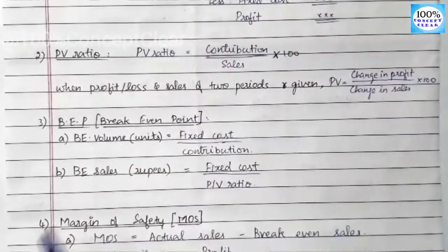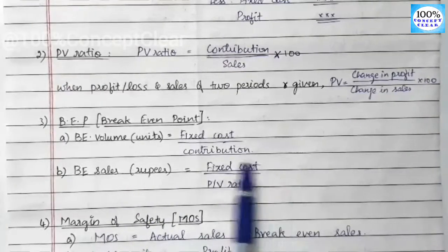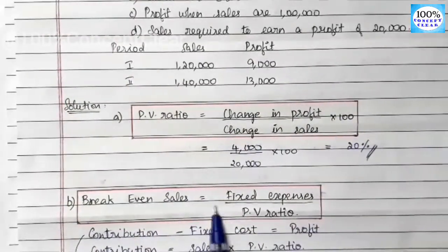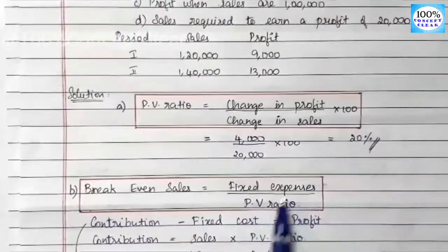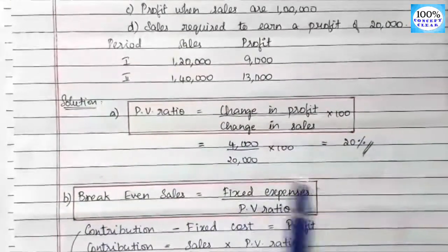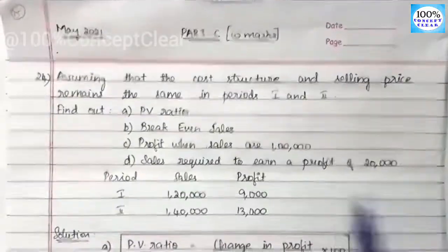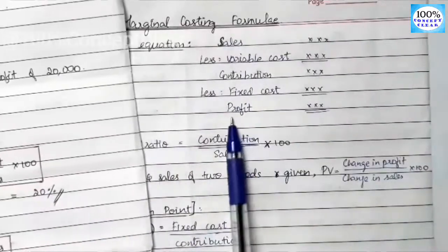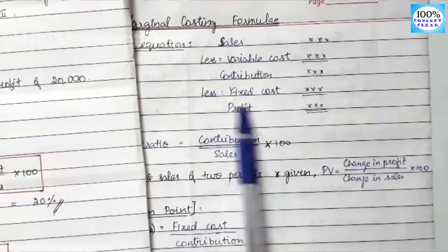Now for break-even sales. The formula is Fixed Cost divided by PV ratio. But first we need to find Fixed Cost, which is not directly given in the question. Using the formula: Contribution minus Fixed Cost equals Profit, and rearranging: Fixed Cost equals Contribution minus Profit.